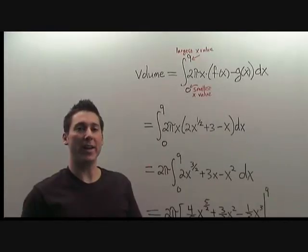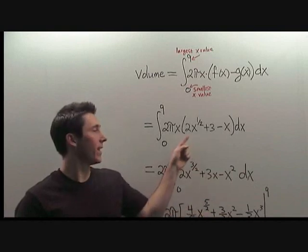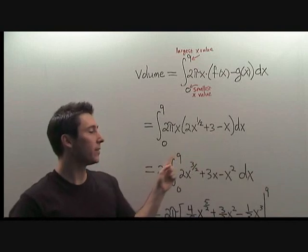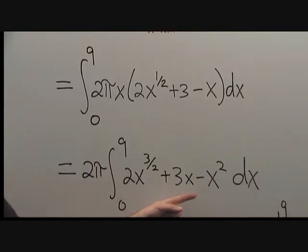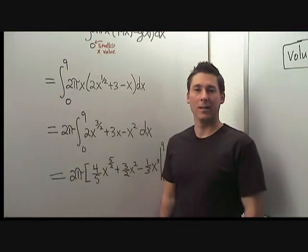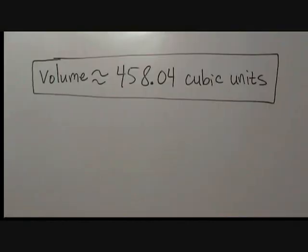We are almost finished with this problem. All that's left to do is compute the integral for the volume. We plug in what f and g are and then expand everything out into one expression. Now we can anti-differentiate to get this expression. At this point, it would be best to get your calculator to finish off this evaluation. The final answer will be the volume is approximately 458.4 cubic units.